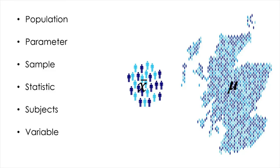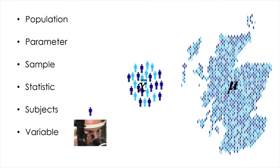The subject refers to the units of the sample on which characteristics are measured — individual students would be an example of a subject in our case. And the variable is the characteristic being measured or recorded — in our case, intraocular pressure.